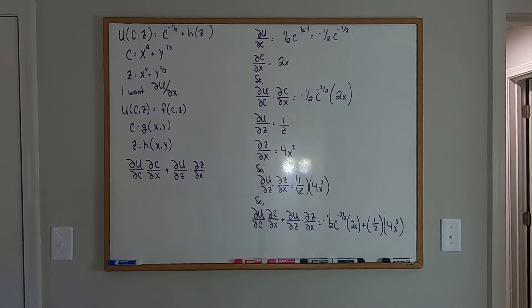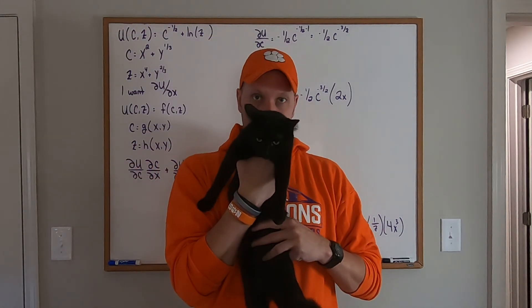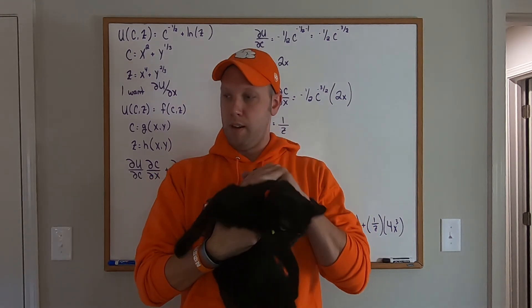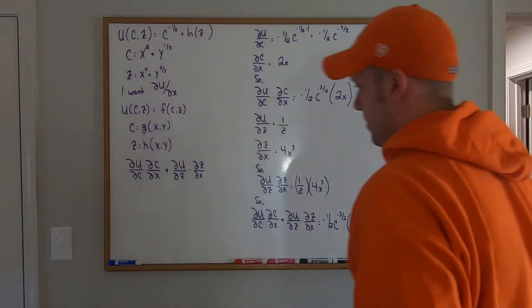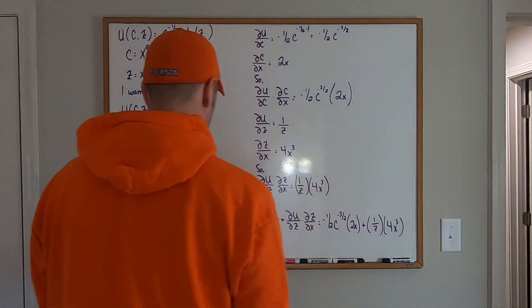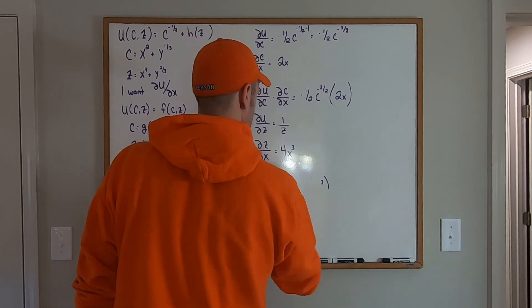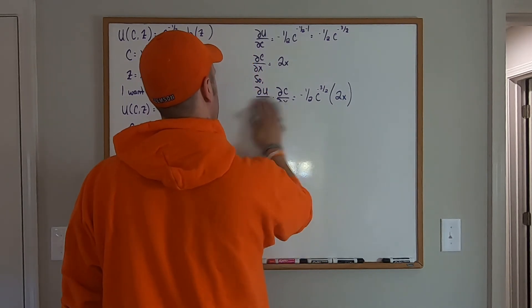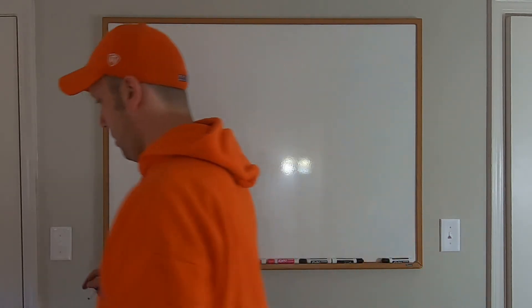Everybody say hi to Isis — this is the wife of Osiris. I've got a thing for black cats if you haven't noticed. Admittedly, this is a particularly difficult math problem, but it's good to see even a tough example. Let's do another example with the chain rule — a slightly easier one this time.